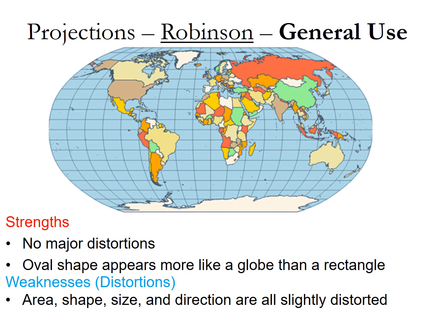Finally we get to our Robinson projection. This is our general use projection — it's the one you see in classrooms, it's the one you see everywhere. Its major strength is that it doesn't have major distortions. It distorts everything slightly — area, shape, size, direction — all of it is slightly distorted to make it look as realistic as possible. So this is the one we generally see; this is the one you'll see in my classroom, and probably 99% of the time.